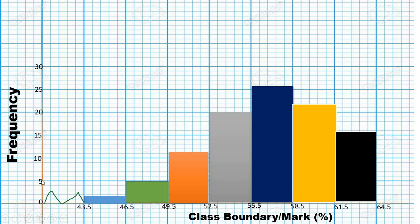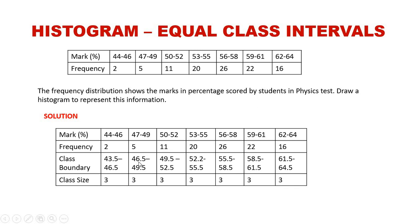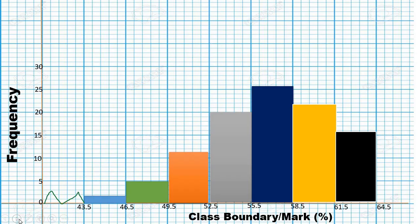For 43.5 to 46.5 the frequency is 2, so the bar height is at 2. From 46.5 to 49.5 the frequency is 5, so that bar is raised to 5. Remember, it's frequency against class boundary.